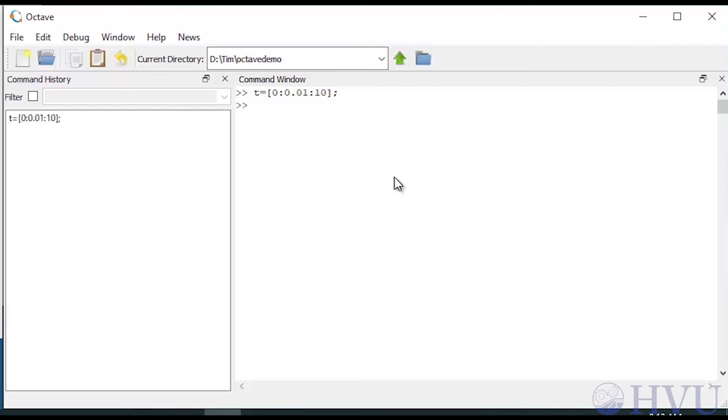Now I'll implement the equation. I'll name my variable y and set it equal to 3 times exp of negative t over 2. Exp is Octave's function to evaluate exponentials. Use dot times to multiply this vector by cosine of 4 times t. Cos, as you may guess, is Octave's cosine function.